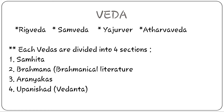Each Veda is divided into four sections. So we have four Vedas — Rig Veda, Sam Veda, Yajur Veda, and Atharva Veda — each divided into four sections. Those four divisions are: Samhita, Brahmana or Brahmanical literature, Aryankas, and the Upanishads.